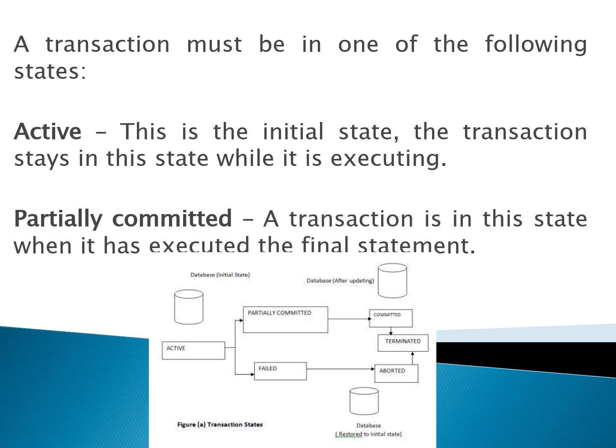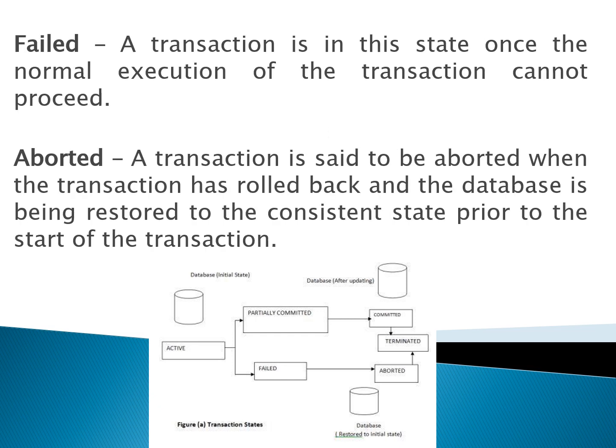Partially committed: a transaction is in this state when it has executed the final statement. When it has executed the final statement, it is called the partially committed state. Failed state: a transaction is in this state once the normal execution of a transaction cannot proceed. During a transaction, if some error or failure occurs, it will be in the failed state.